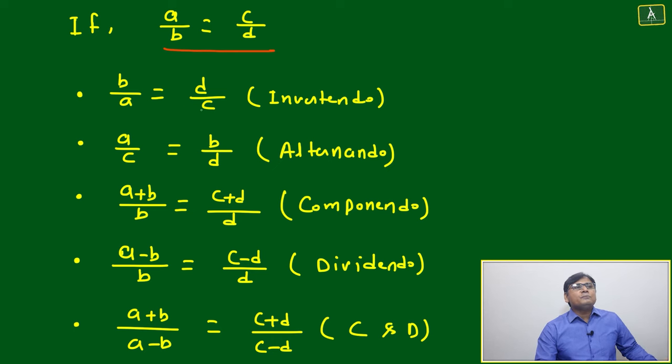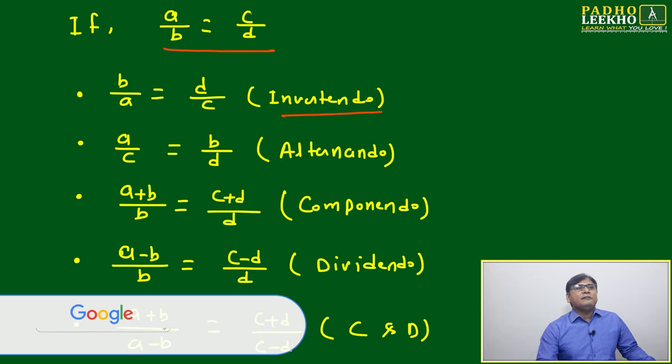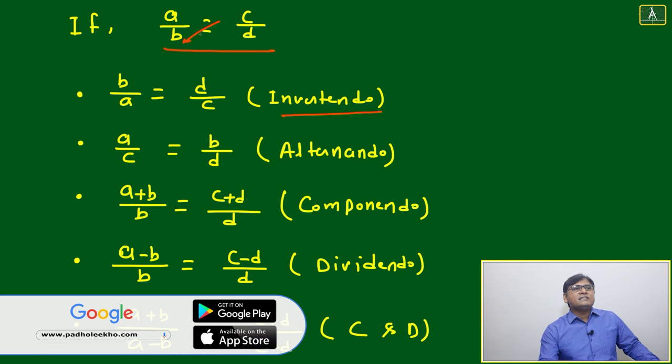a by b equal to c by d. Means just you make reverse: b by a equal to d by c. That is called invertendo. And if you just make a cross multiplication, c you are bringing here and b